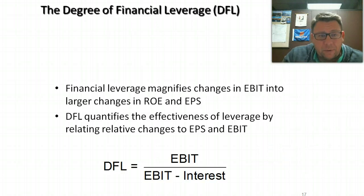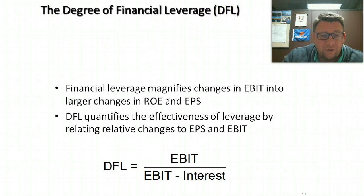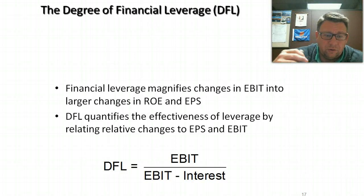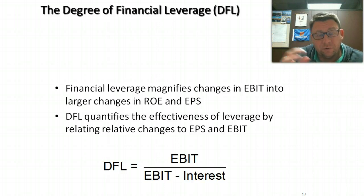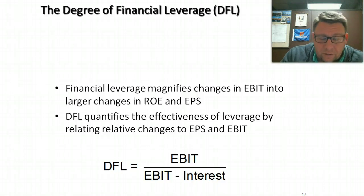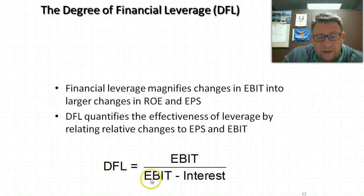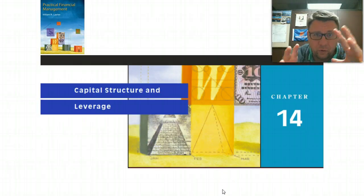The last thing in this podcast is the degree of financial leverage, or DFL. Financial leverage magnifies the change in EBIT into larger changes in ROE and earnings per share. If our degree of financial leverage is 10, we know what effect a change in EBIT will have. The calculation is: EBIT divided by (EBIT minus interest) equals the degree of financial leverage. That was a long podcast — I just wanted to do all of the financial leverage material together.